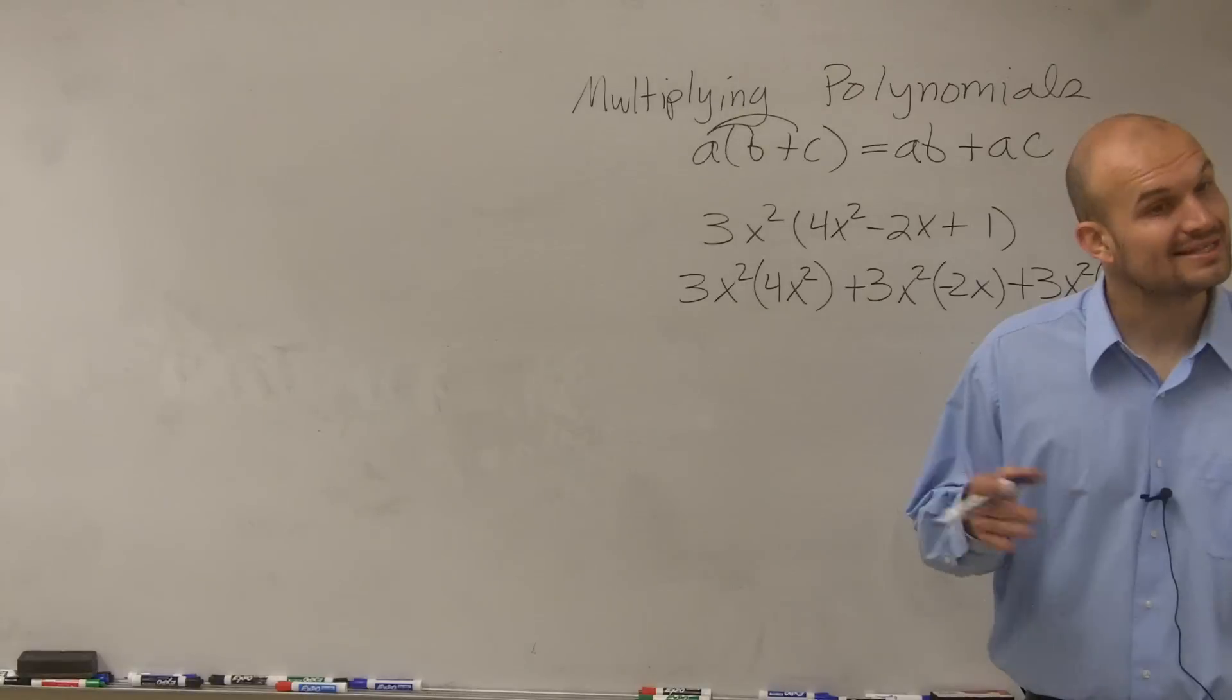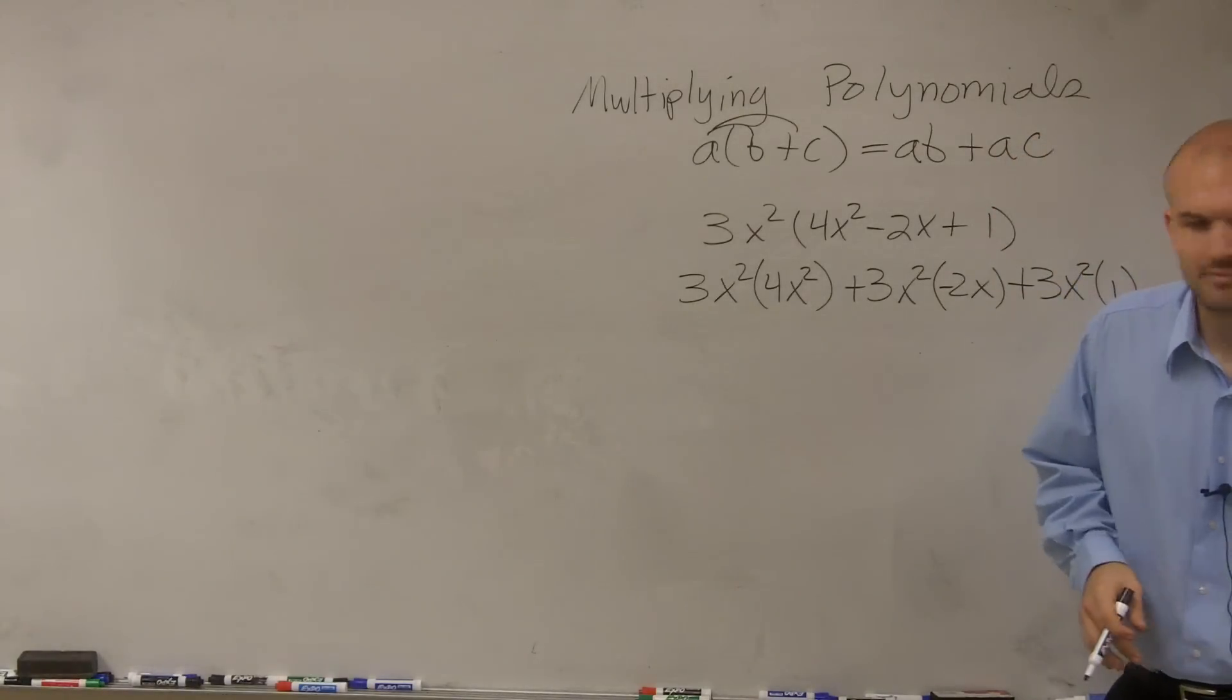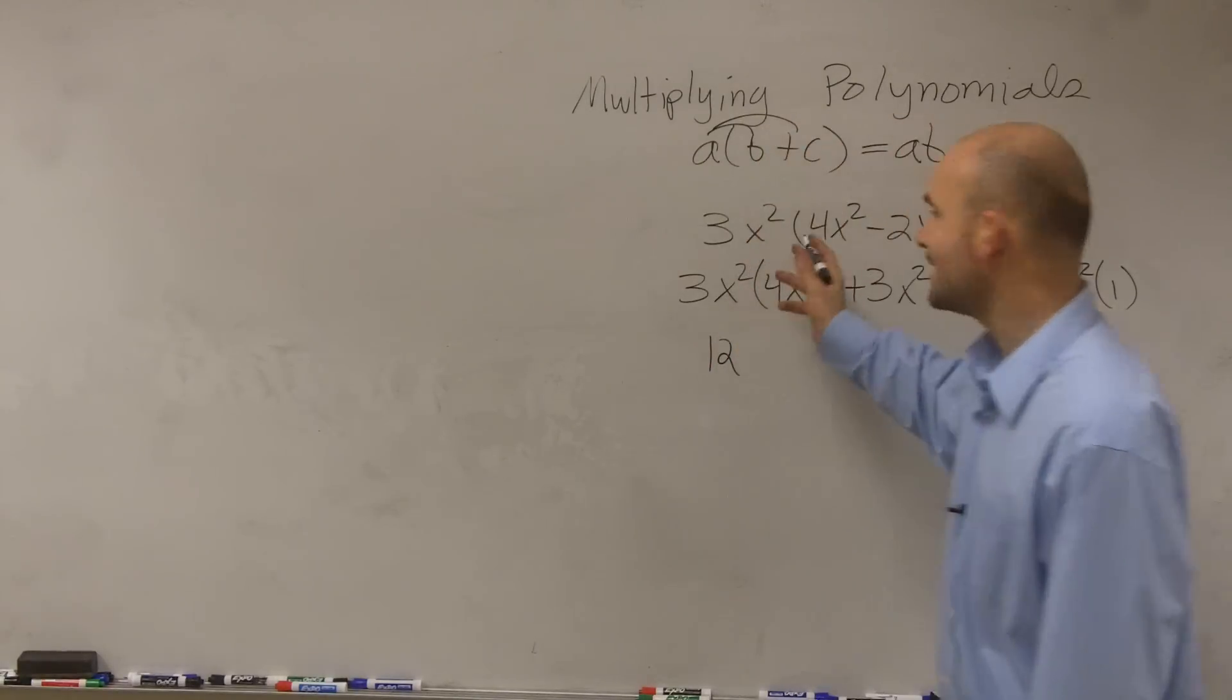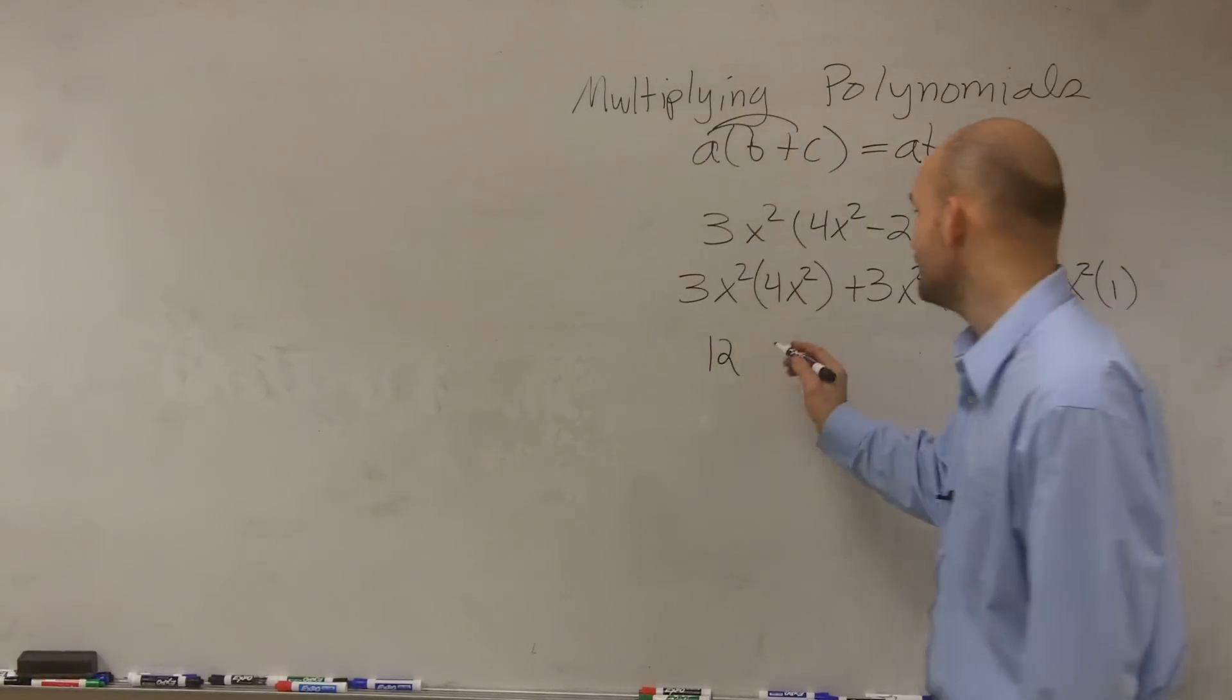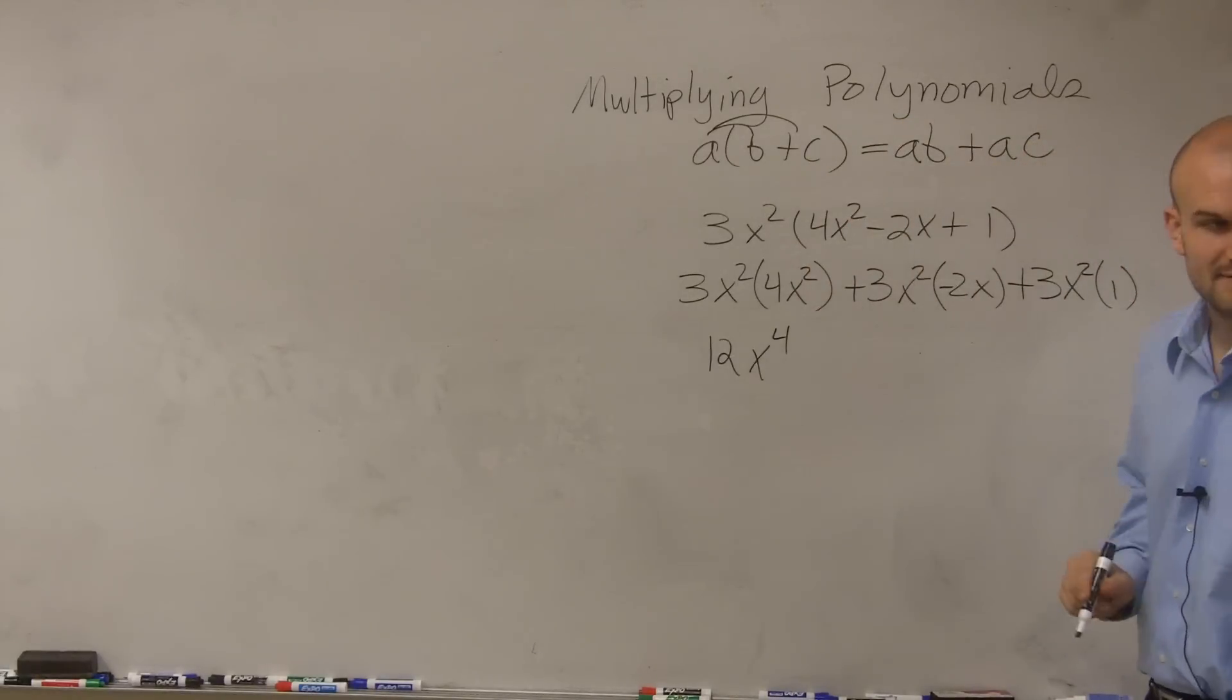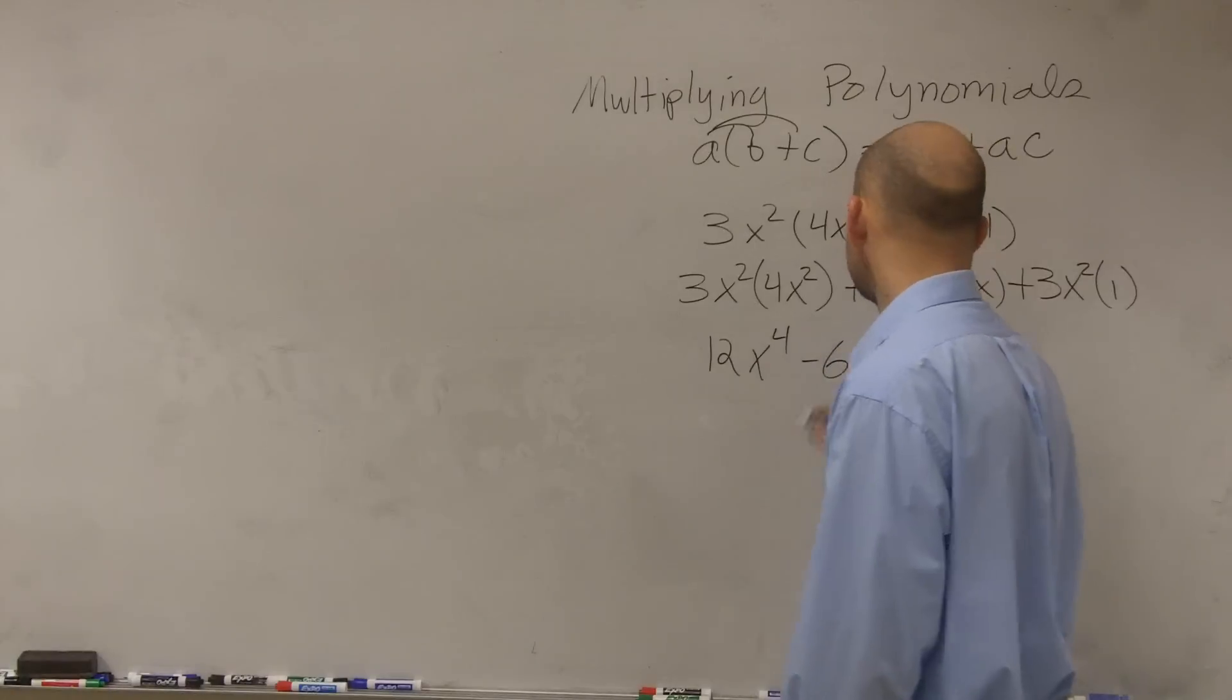You add the exponents, very good. And the numbers, you're just going to multiply them through, right? So 3 times 4 is 12. x squared times x squared is going to leave you with x to the fourth. 3 times negative 2 is going to now provide you with a negative 6.